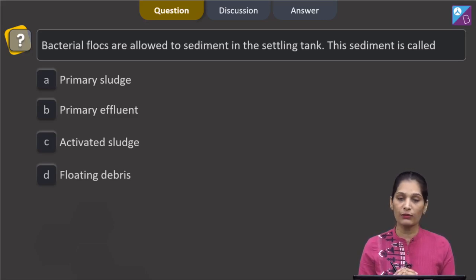Primary sludge, primary effluent, and floating debris are related to the primary treatment of sewage, but the activated sludge is formed during the secondary treatment or the biological treatment of sewage. The primary effluent is the effluent which is released after the primary treatment of the sewage.